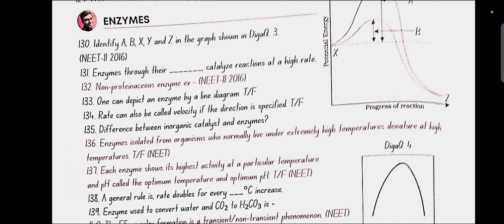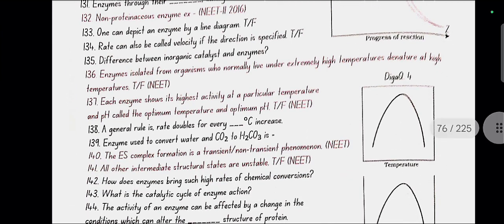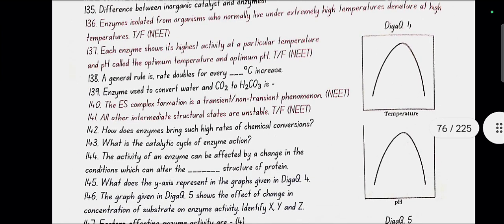Difference between inorganic catalysts and enzymes: inorganic catalysts work efficiently at high temperatures and high pressures, while enzymes get damaged at high temperatures. The enzyme isolated from organisms who normally live under extremely high temperatures denature at high temperatures. No, false. They do not denature. Each enzyme shows its highest activity at optimum temperature and optimum pH. A general rule is rate doubles for every 10 degrees Celsius increase.